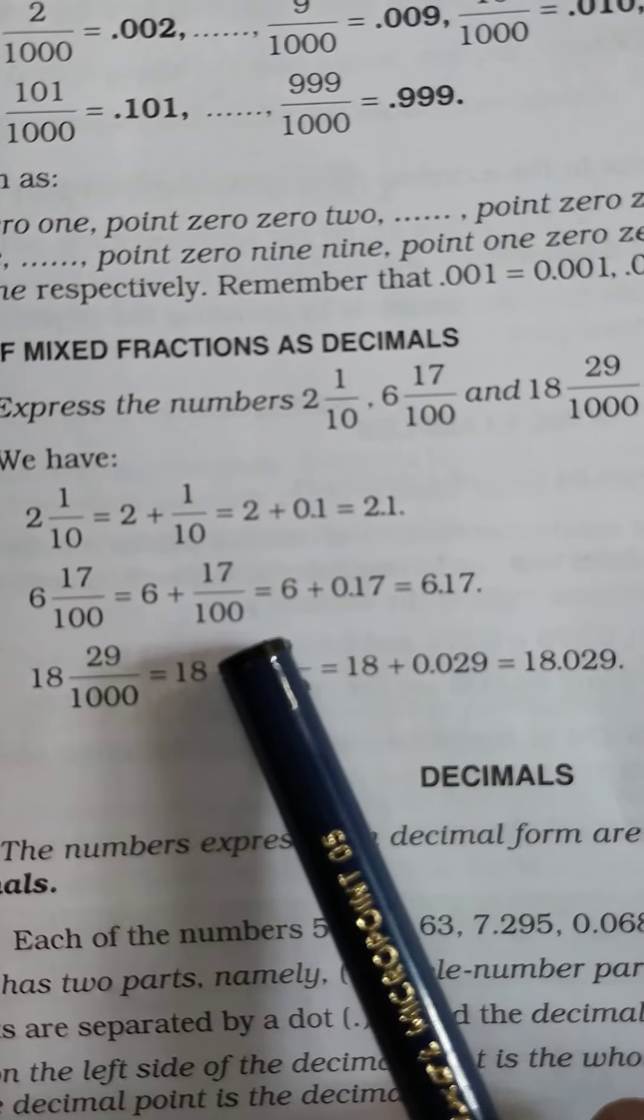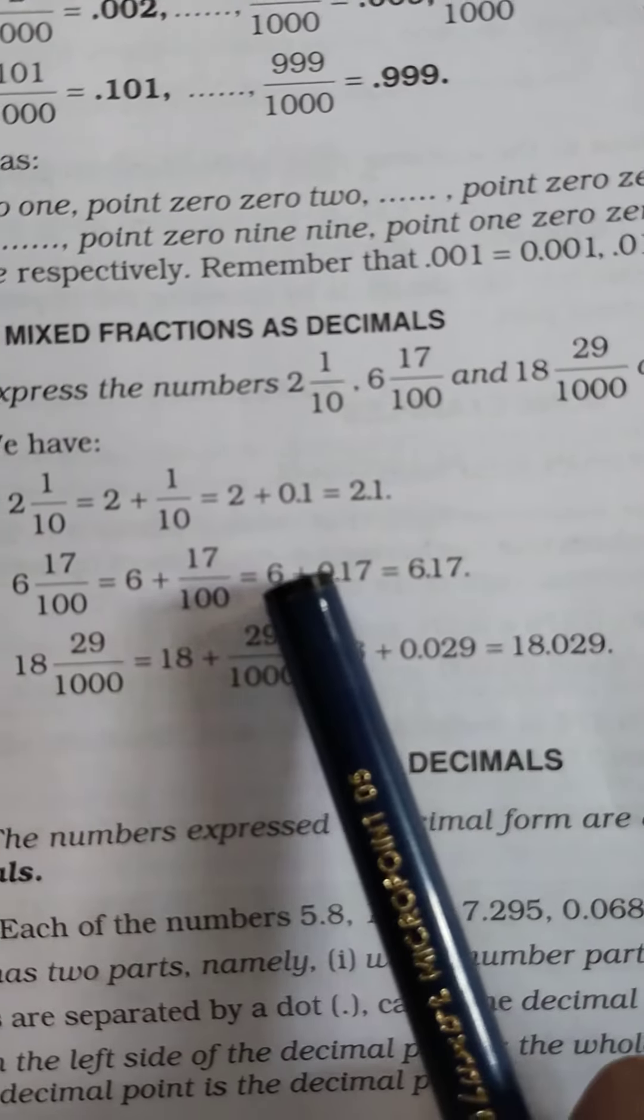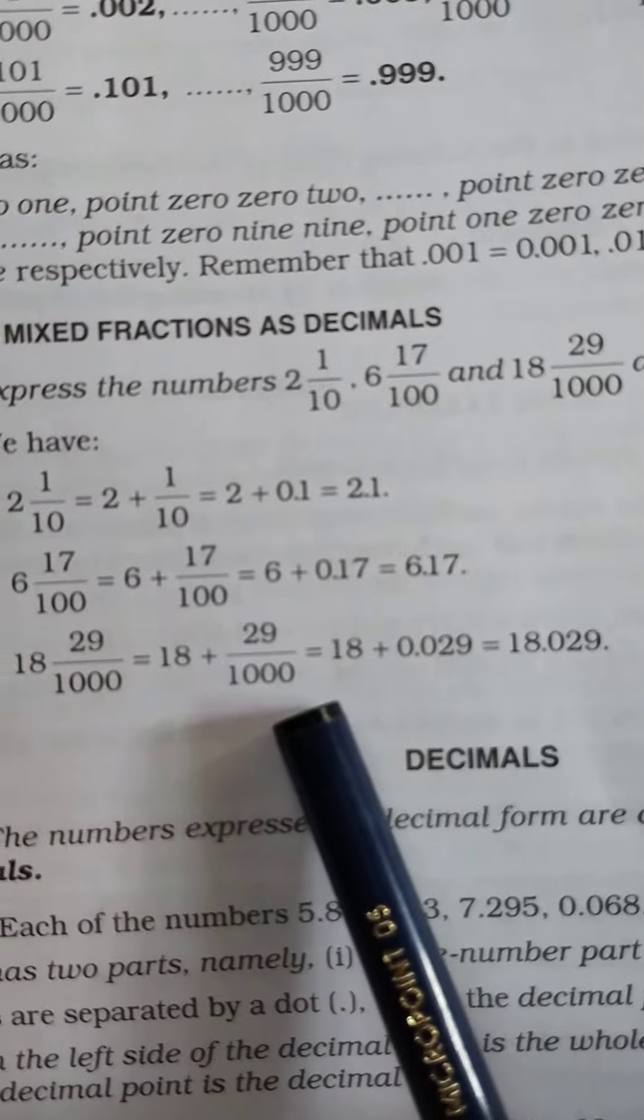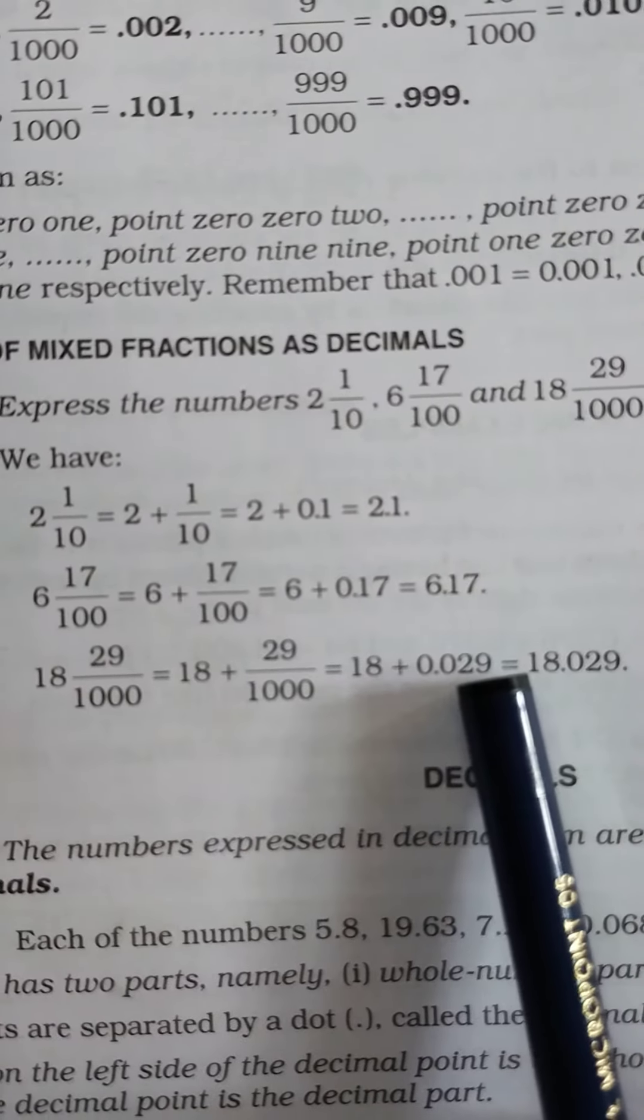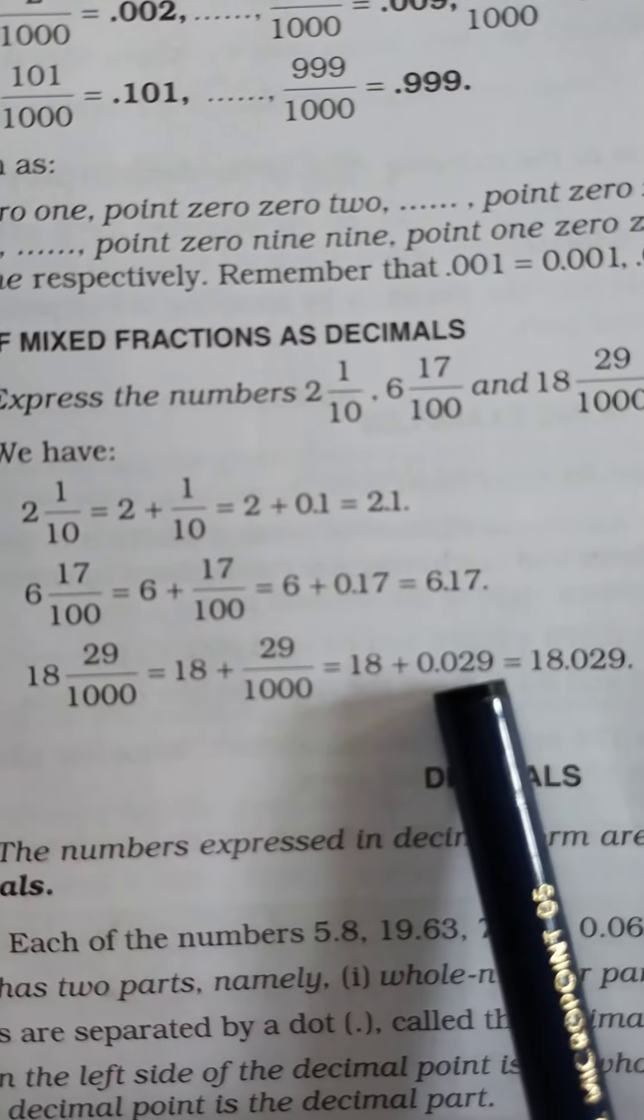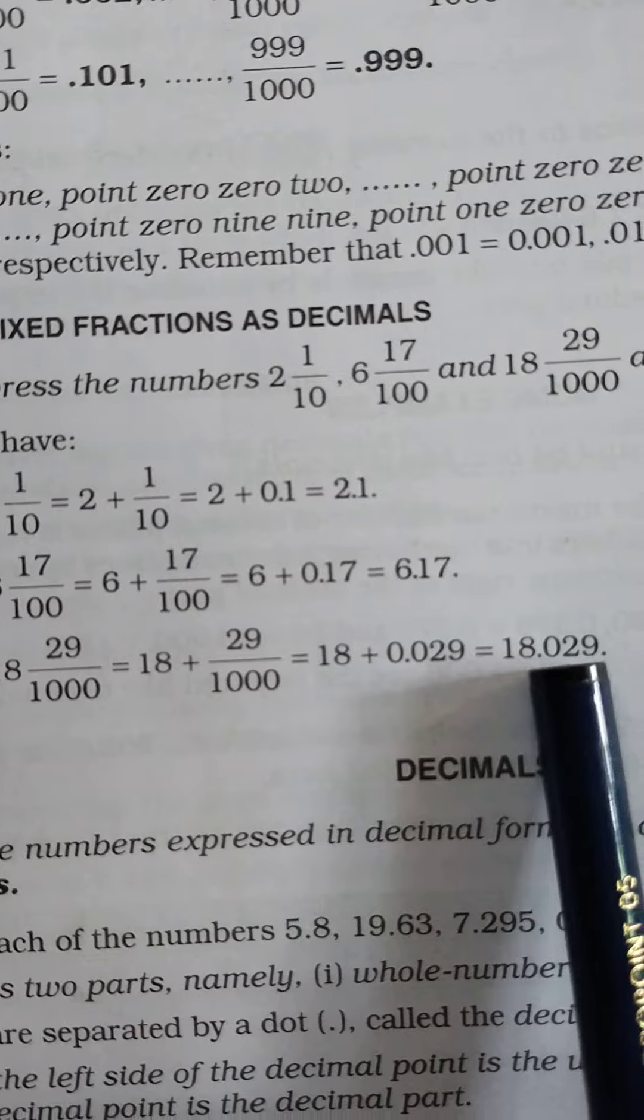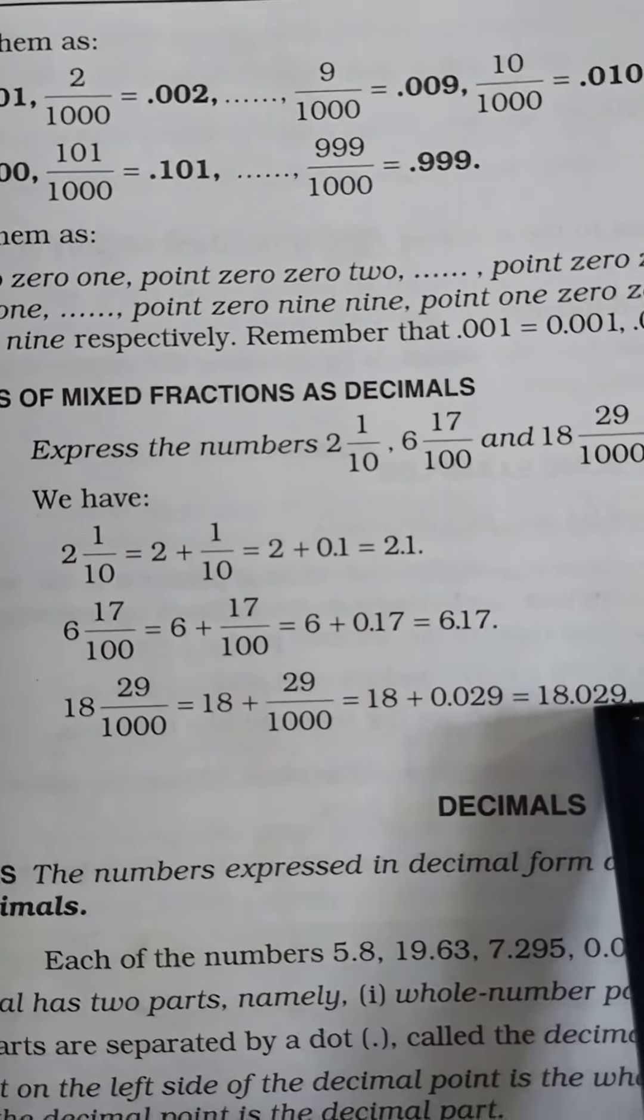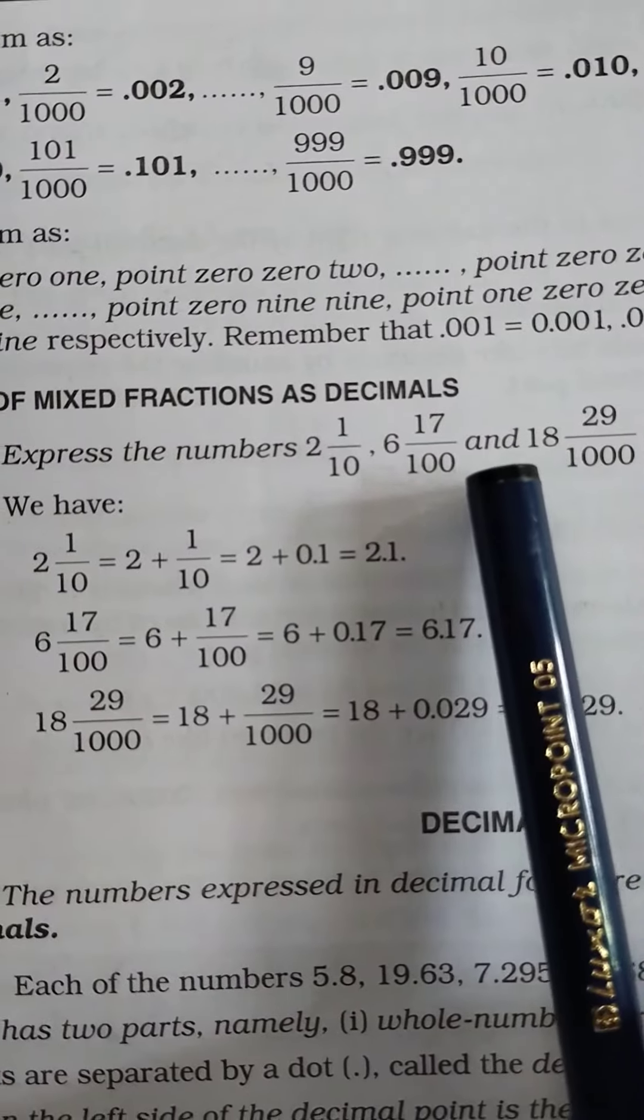If we convert this decimal fraction into a decimal number, it will be 0.029. Now 18 plus 0.029, the answer will be 18.029. So this is how we can convert mixed fractions as decimals.